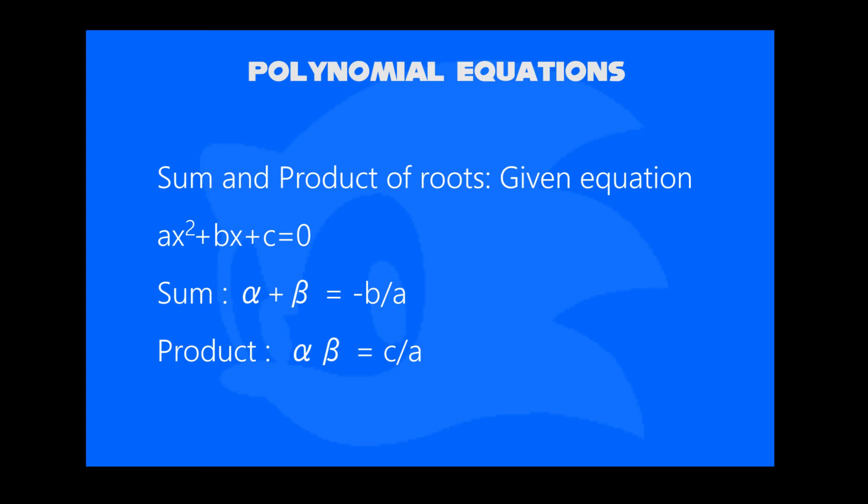And in sum and product of roots, we write alpha plus beta equals minus b by a. And if you write a product, then alpha multiplied by beta equals c by a. Then you can find the roots of a quadratic polynomial equation.